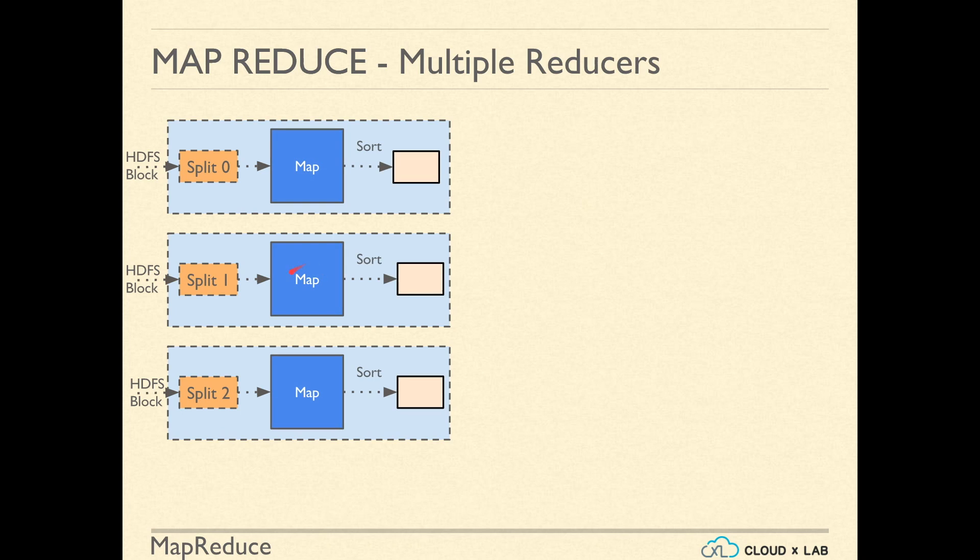Mapper is the logic that you have defined. This logic takes a record as input and converts it into key-value pairs.